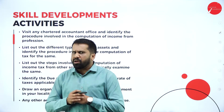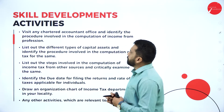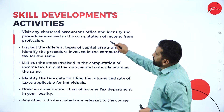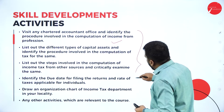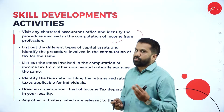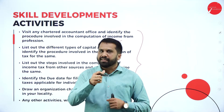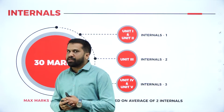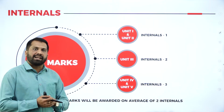All five units are interesting and easier compared to Module 1. For skill development, you can visit any chartered accountant office and identify the procedures involved. Out of all the activities listed, you need to select any two or three and record them in your practical record book.